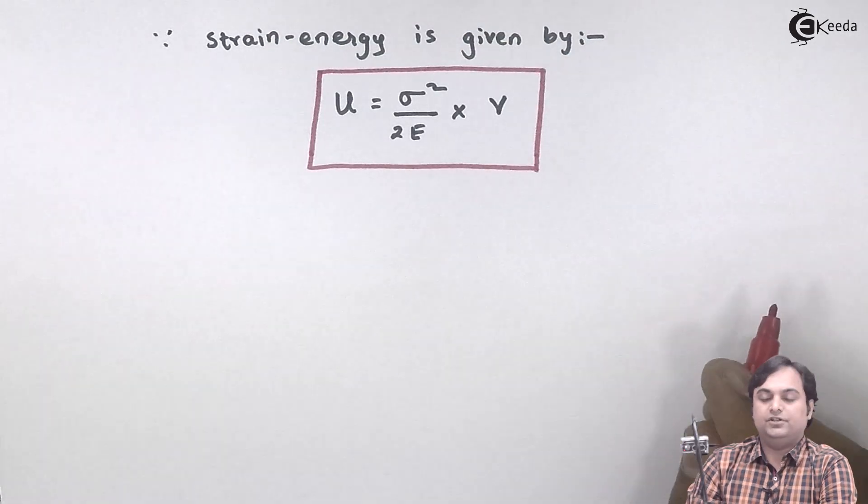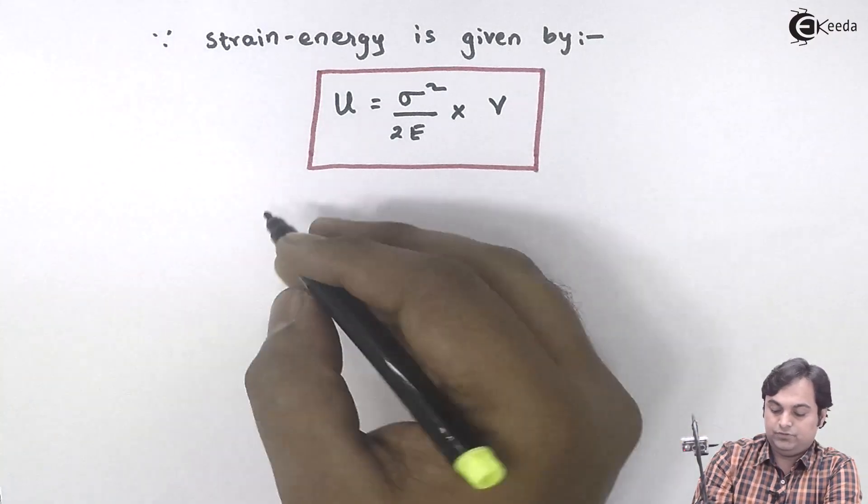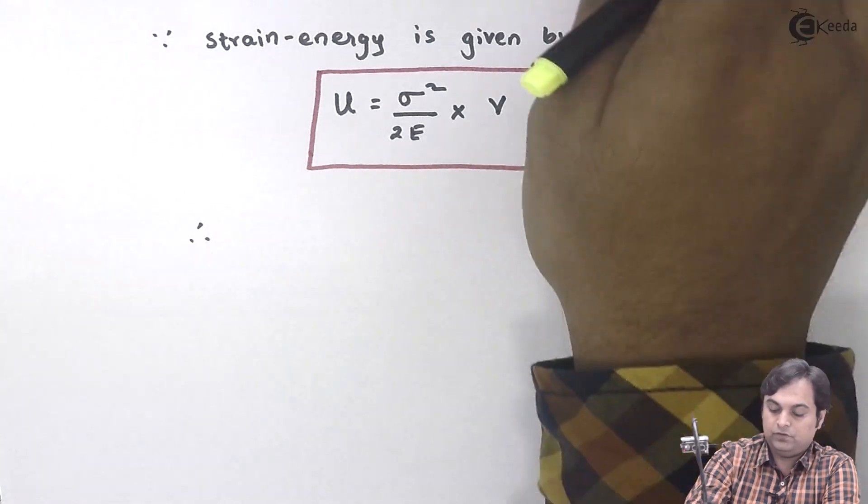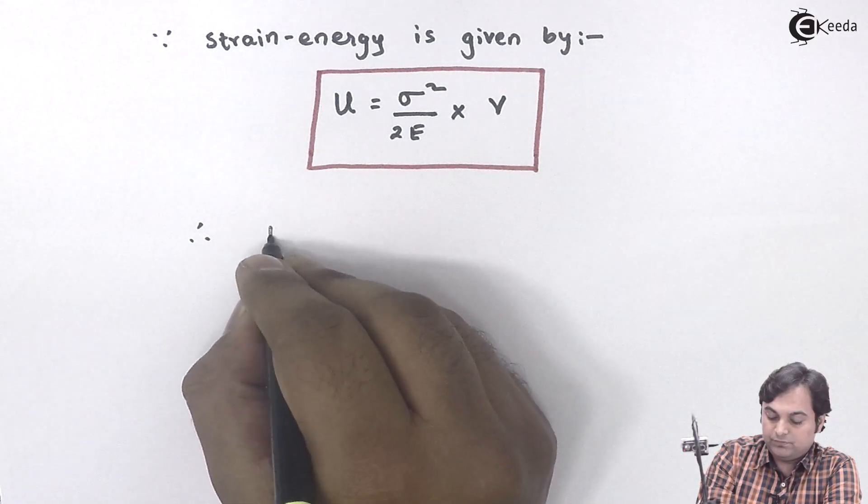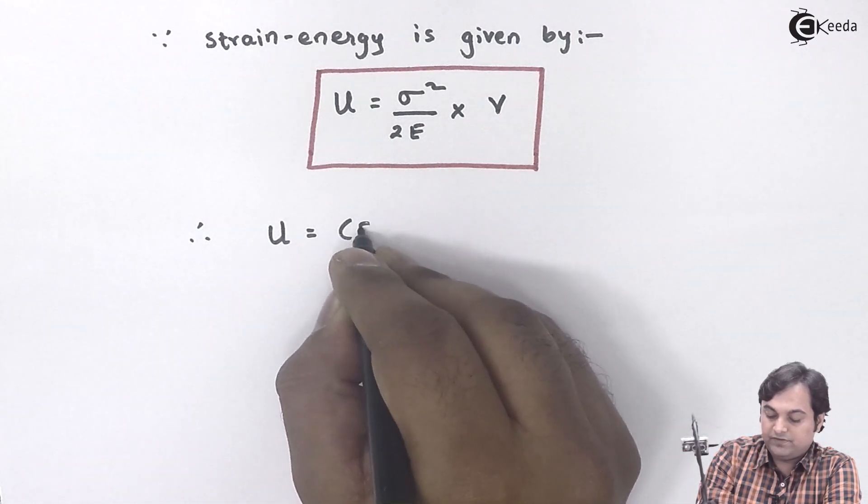So therefore, capital U is equal to sigma. I have found out it is 56.